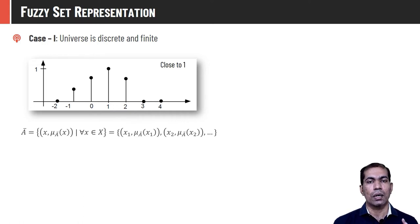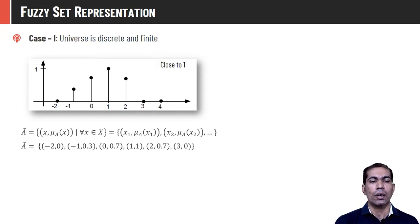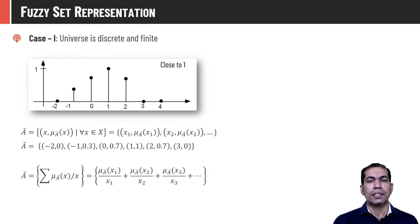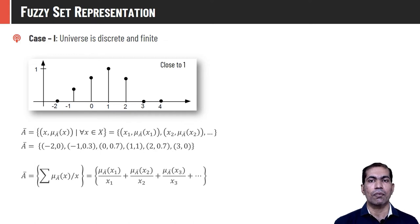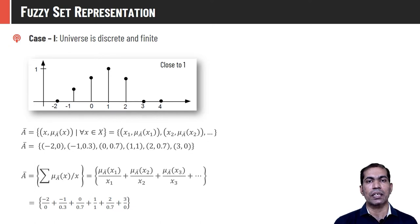Another way to represent a fuzzy set is using the summation or disjunction notation: Ā = Σ μ_Ā(x)/x. This is not a division operation — it's just a representation where the numerator is the membership value and denominator is the element itself. For our example: 0/−2 + 0.3/−1 + 0.7/0 + 1/1 + ... This alternate representation will be used throughout the course.